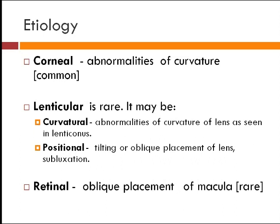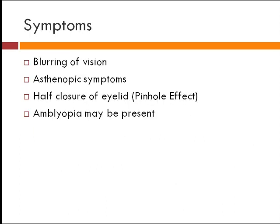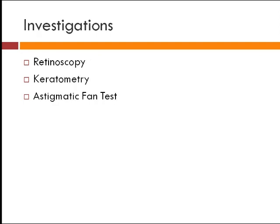The most common etiology is corneal, then lenticular which is very rare, and lastly retinal which is very very rare. Symptoms include blurring of vision, asthenopic symptoms, and the pinhole effect. The pinhole effect is a phenomenon in which placing a pinhole in front of a patient with a refractive error improves vision. The patient creates this phenomenon by partially closing the eye, which acts as a pinhole and improves vision — they will tell you that they see better when they half-close their eye. Amblyopia may also be present.